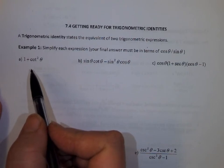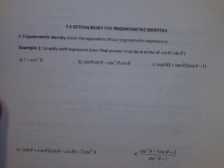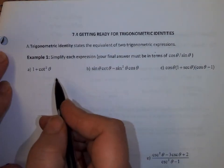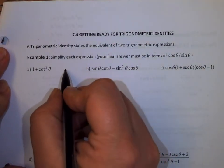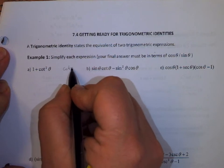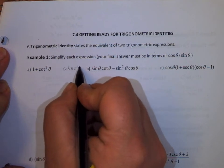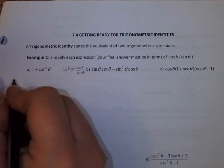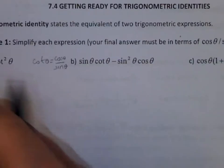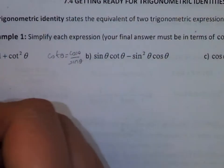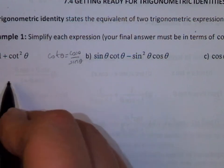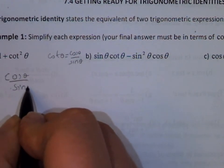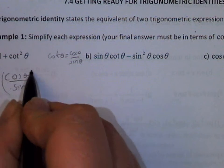You know that tangent theta is sine theta over cosine theta. Then cotangent theta is cosine theta over sine theta. Now we can replace cotangent squared theta by (cosine theta over sine theta) squared.